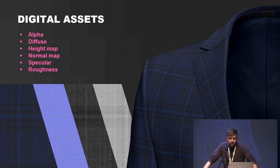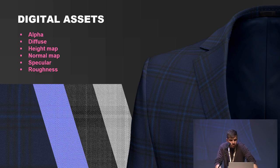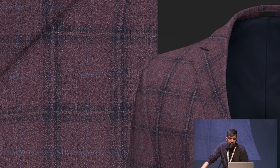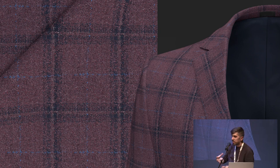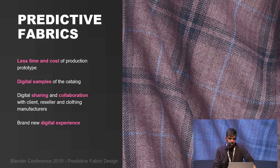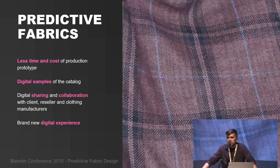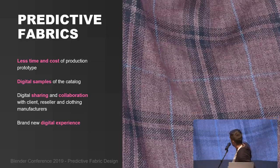Another interesting output for this market is digital maps for digital materials. We are able to export seamless maps after rendering using render layers. This is another example applied to a jacket, and one more complex example of felted fabric where the structure is not regular but very mixed. Another type of output is an animation of the fabric.